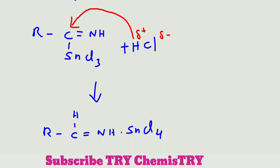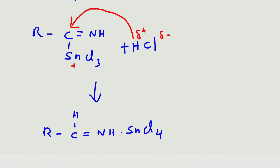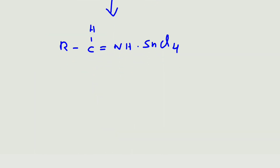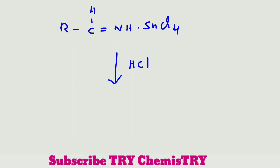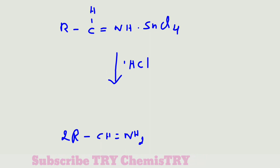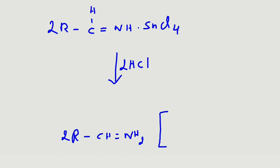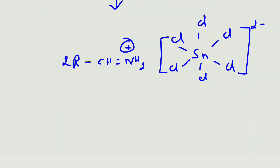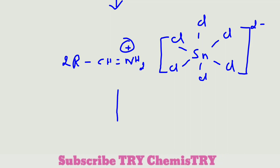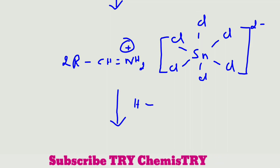The H⁺ ion attacks the carbon and the positive charge on tin is neutralized by Cl⁻. In the next step, two molecules of this compound are taken. When one more hydrochloric acid is added, we get the product R–CH=NH₂ and stannous hexachloride [SnCl₆]²⁻.